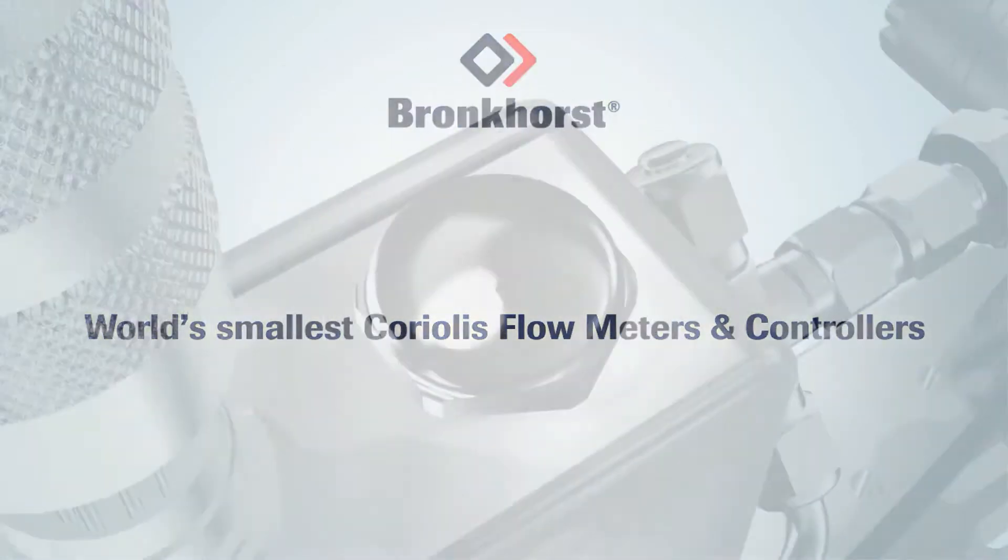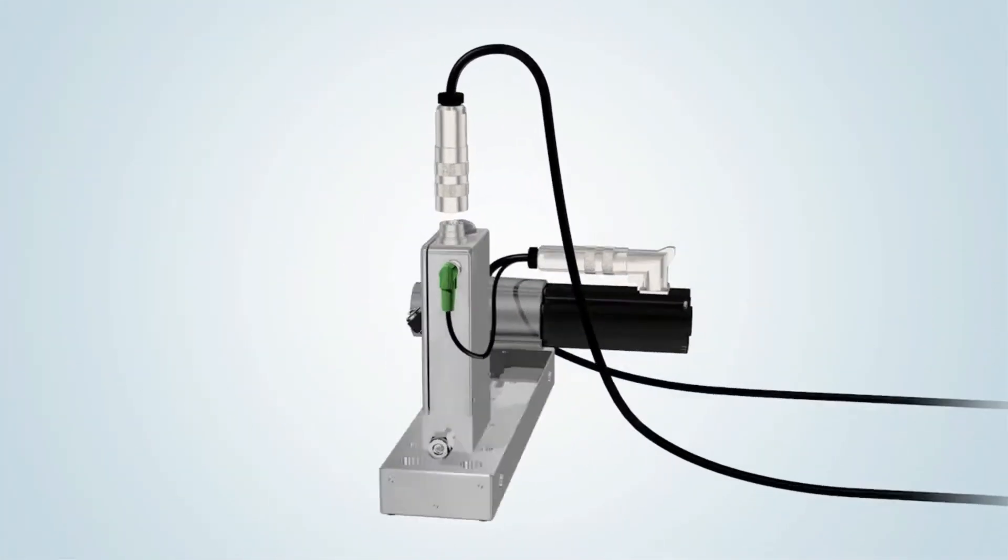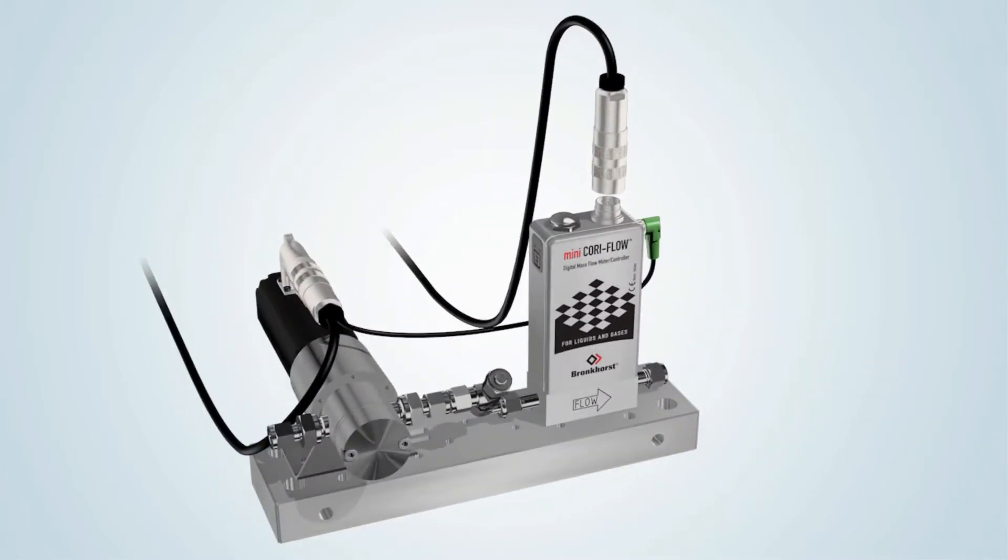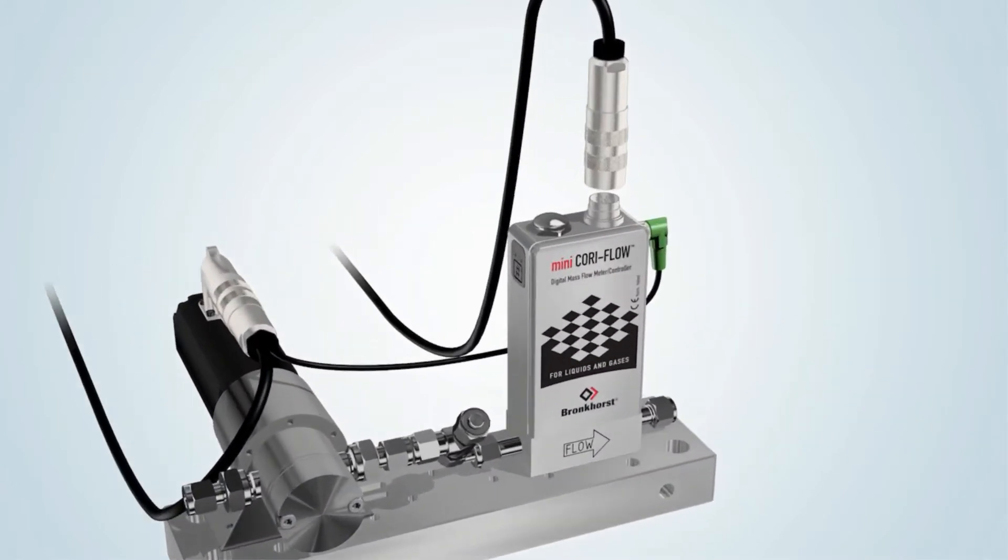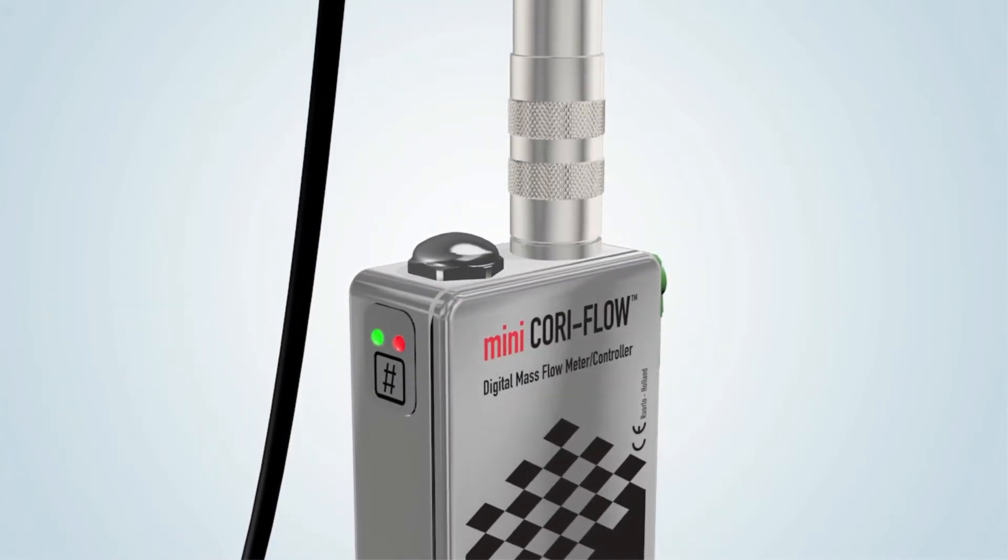A Bronkhorst mini Cori flow instrument requires a voltage of between 15 and 24 volts. When the supply voltage is connected, the LEDs show the current status. The instrument is ready for use when the green LED lights up.